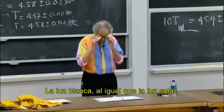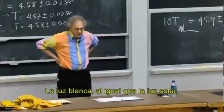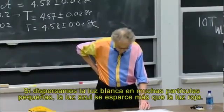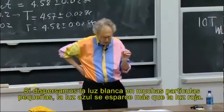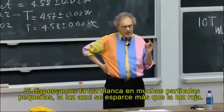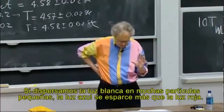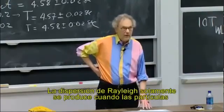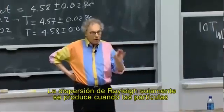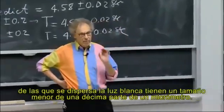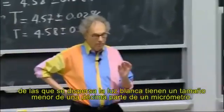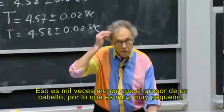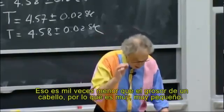White light, like sunlight, is composed of all the colors that you see in the rainbow. If I scatter white light off very small particles, then the blue light is scattered more than the red light. We give that a name in physics — we call that Rayleigh scattering. Rayleigh scattering only happens when the particles off which the white light scatters are smaller than a tenth of a micron, which is a thousand times smaller than the thickness of your hair. So it has to be very, very small.